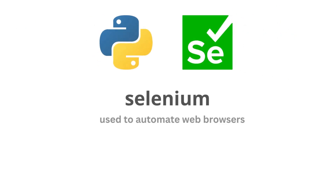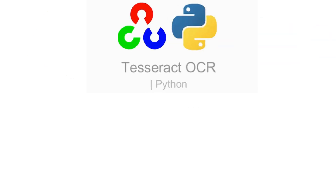Next is Selenium. Selenium is a very popular web automation library that can be used for automating web browsers. It allows you to write scripts that can interact with web pages, fill out forms, and perform other tasks that involve web browsers. Selenium is a must-have tool for RPA developers who want to automate tasks involving web browsers.